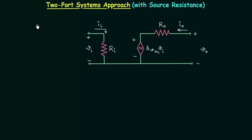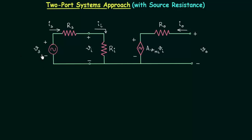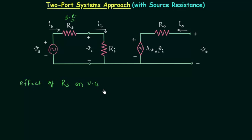In the previous presentation we analyzed the internal circuit of a two-port system with the load resistance. In this lecture we will analyze the internal circuit of a two-port system with the source resistance. You can see in this circuit we do not have the load resistance RL; we will connect the source voltage VS with the internal source resistance RS. The prime aim of this lecture is to find out the effect of source resistance RS on the voltage gain.